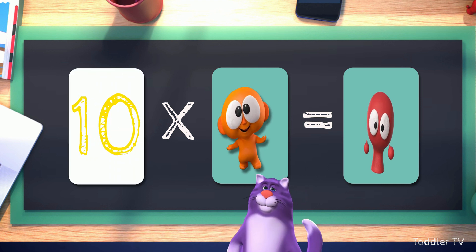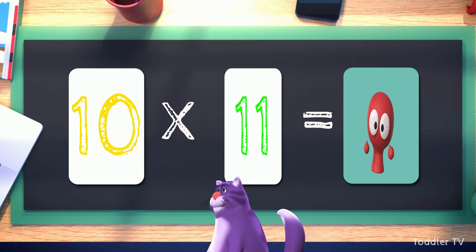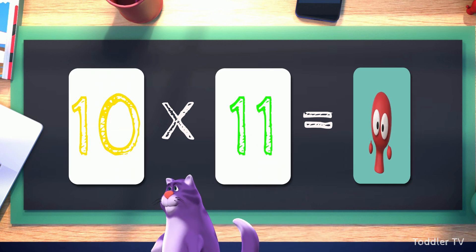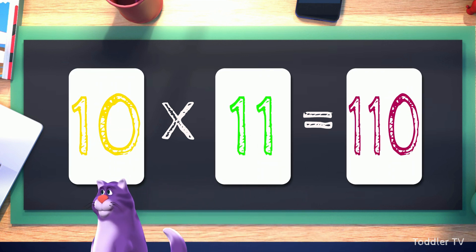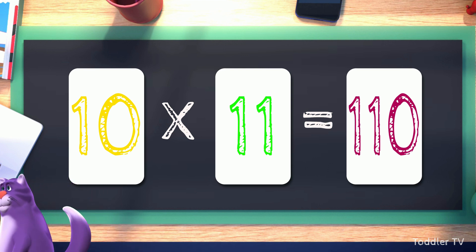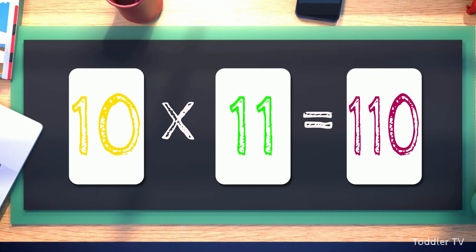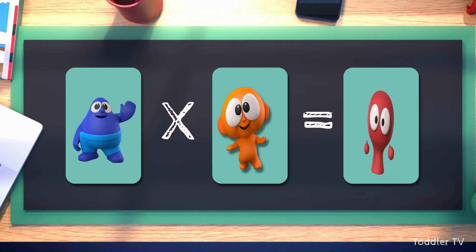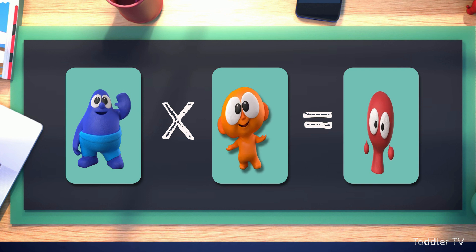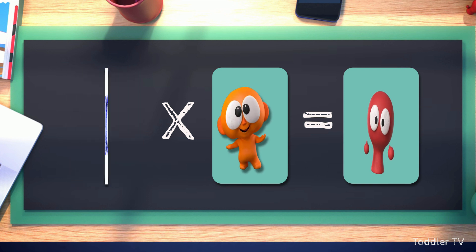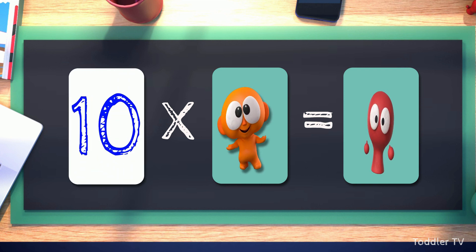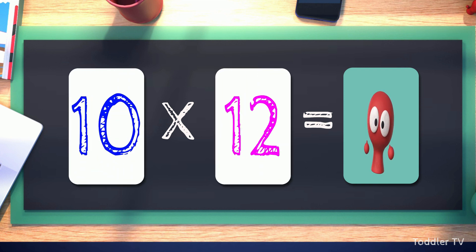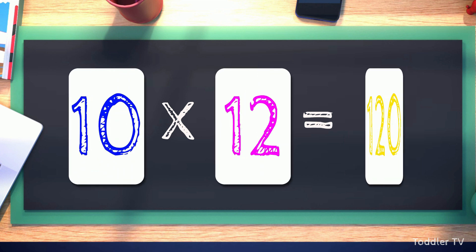Ten times ten equals one hundred. Ten times eleven equals one hundred and ten. Ten times twelve equals one hundred and twenty.